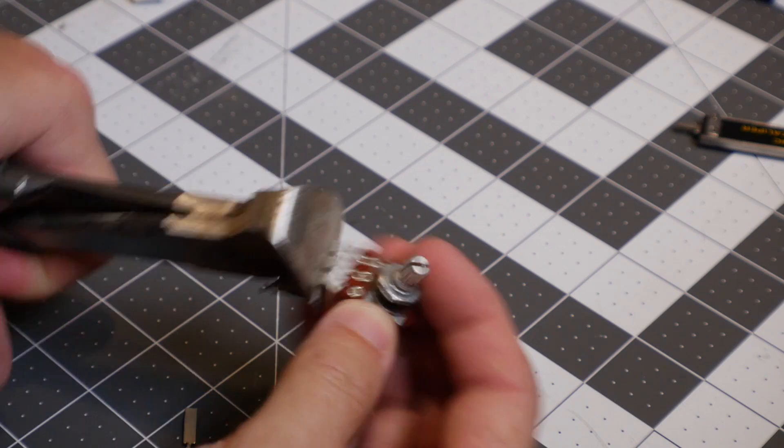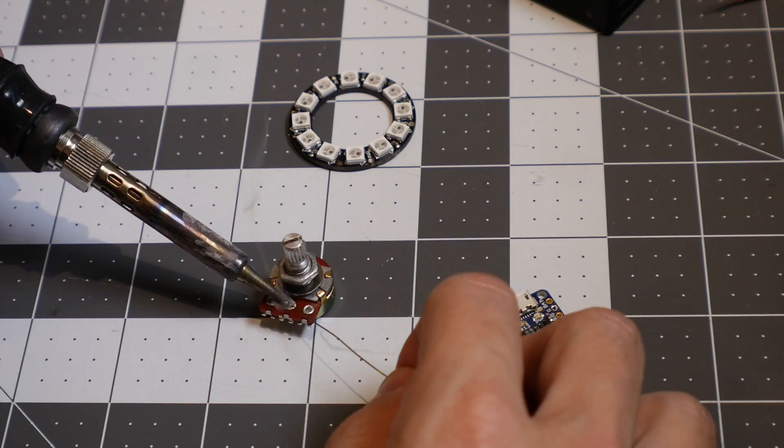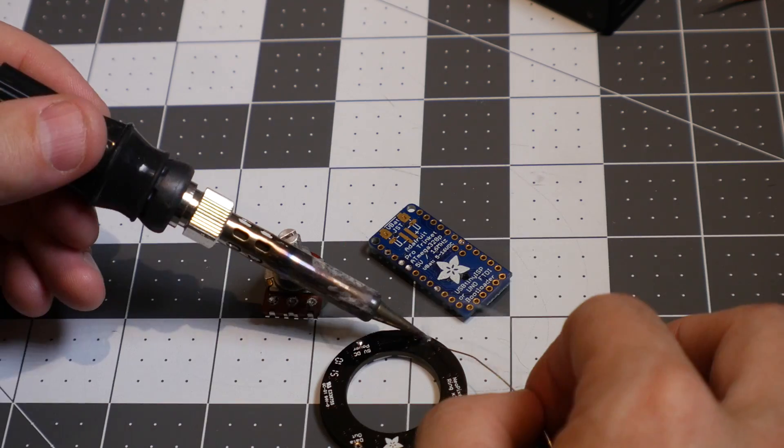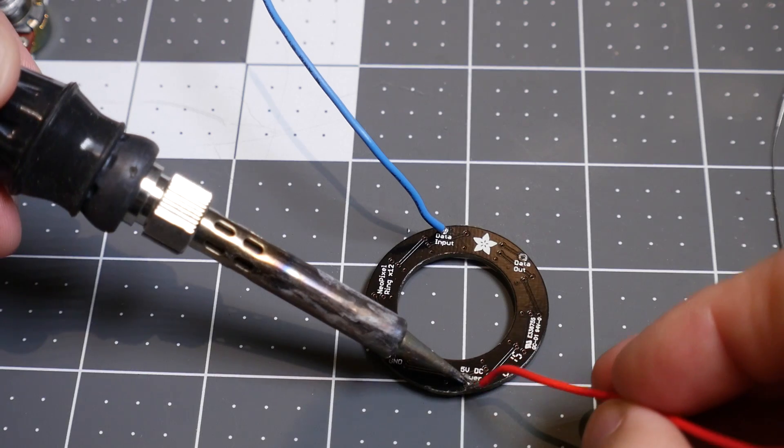I didn't need the long leads on the potentiometer, so I chopped them off with some nippers. Then, for all the different components, I pre-tinned all the connection points. That just means putting a little bit of solder in the places where you're going to solder later. It makes it really easy to add the wires when you're ready.